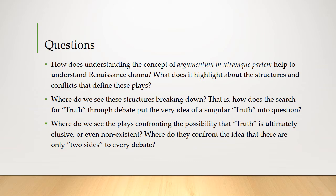Where do they confront the idea that perhaps there are more than two sides to every debate — not only two sides, but maybe even more perspectives? This is something we definitely see in Shakespeare, but also in Kyd and Marlowe and everyone. So look for how these plays both attempt to instantiate a sense of order and truth and an idea of ultimate reality or meaning, while at the same time revealing anxieties about the possibility of ever discovering that truth, or tensions in the way that truth is uncovered through dispute, difference, debate, argument.